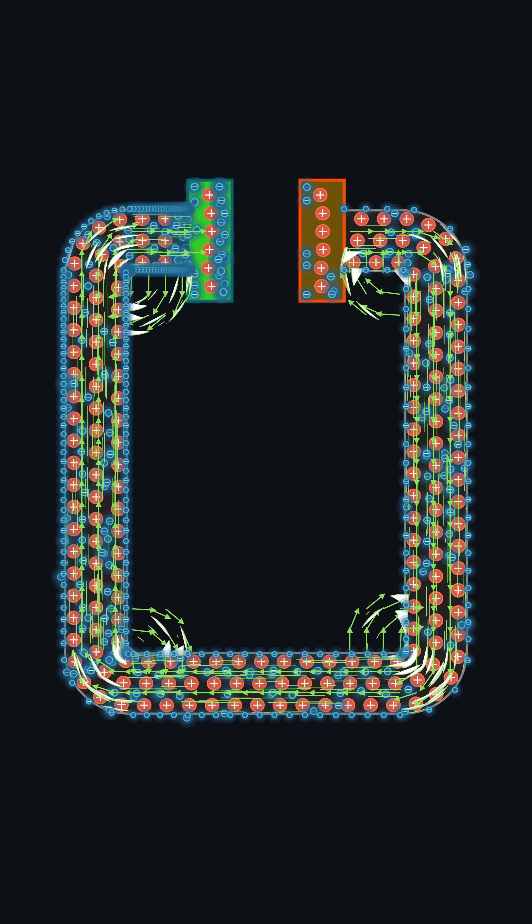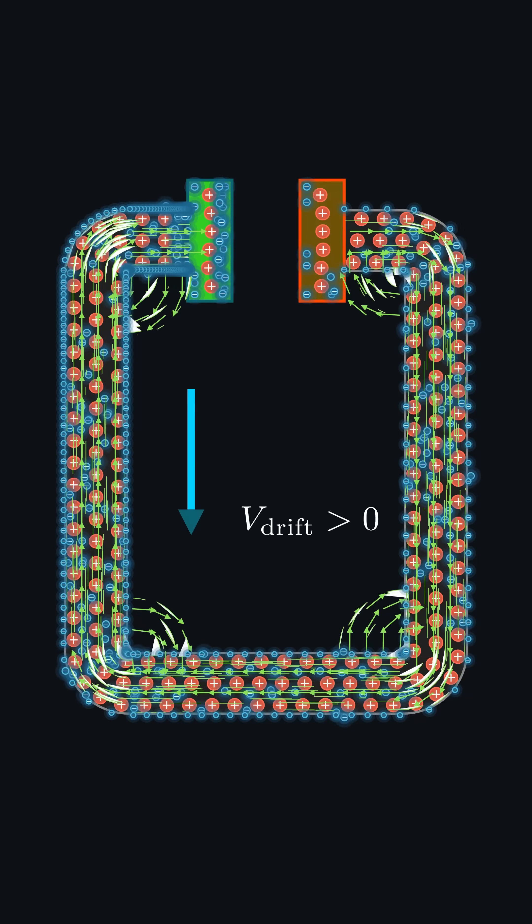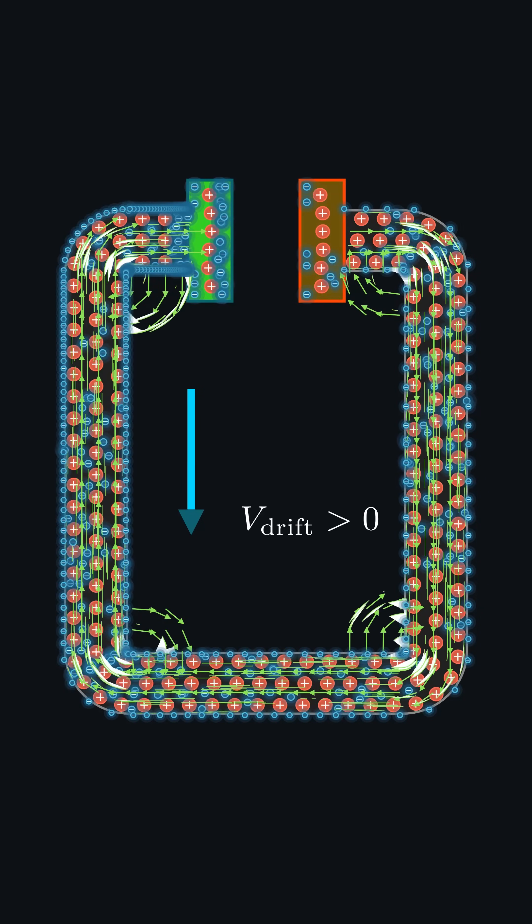And now, the electrons begin to drift, slowly, draining charge from the negative plate and loading it into the positive plate, inching the system toward balance.